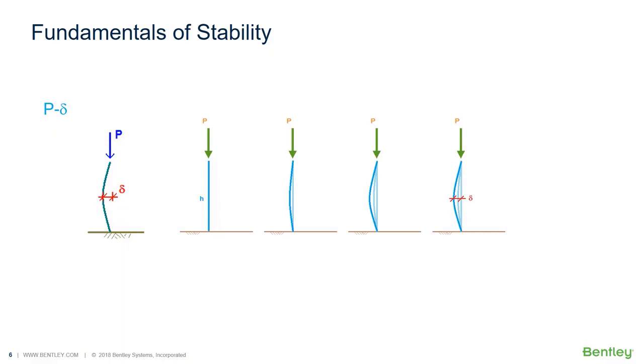If the member is not stable, rather than converging on the final position, it will collapse. Again, this condition is critical and is not detected by a traditional first order analysis.